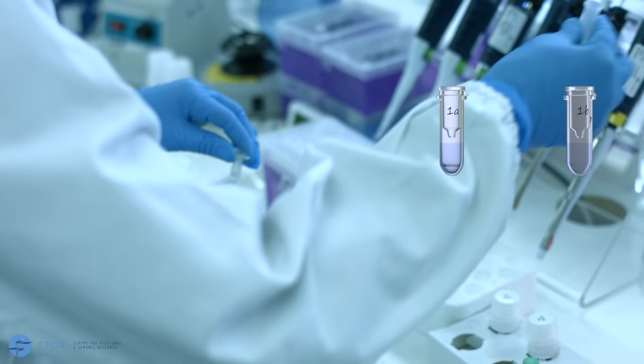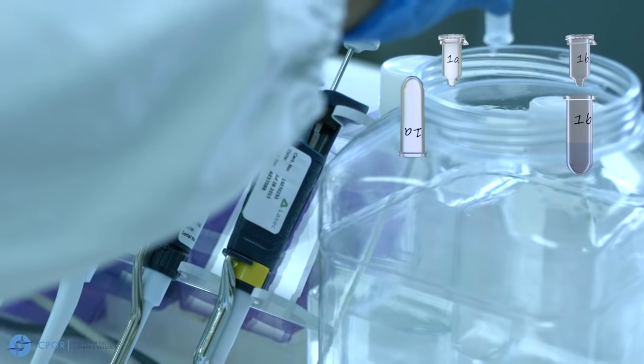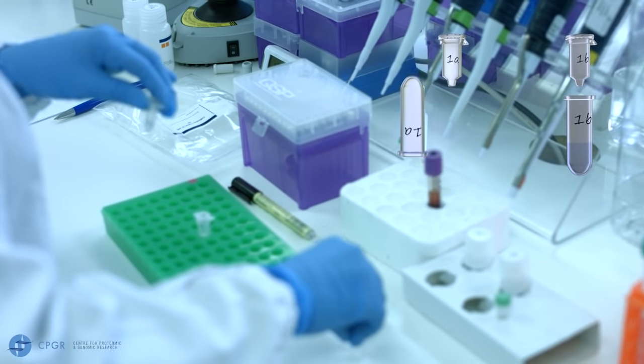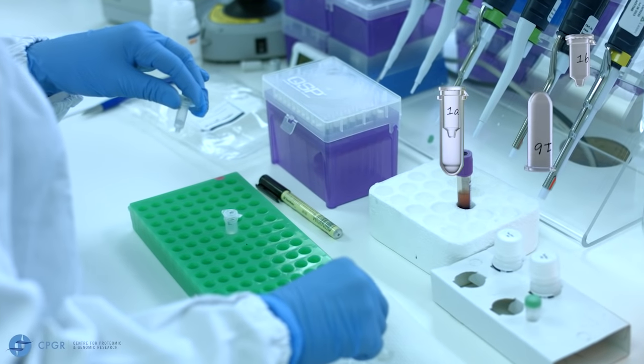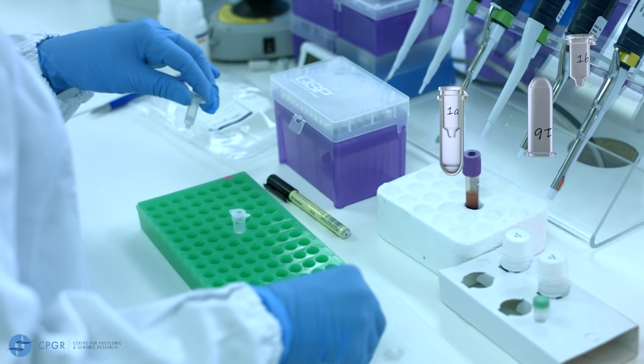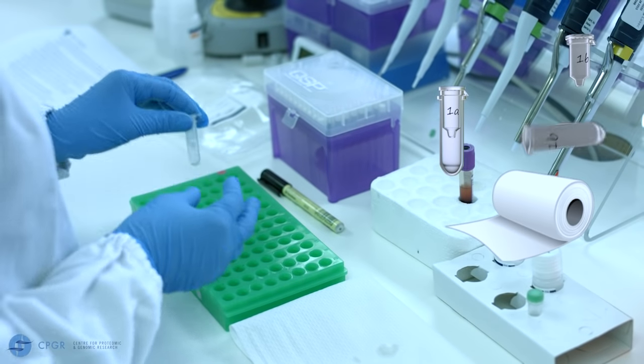Discard the filtrate from the collection tube into a waste container as the collection tube is going to be reused. Dry the rim of each collection tube on a paper towel and replace the spin column.